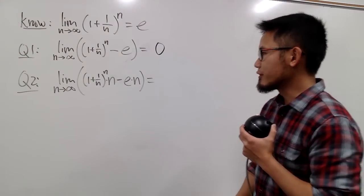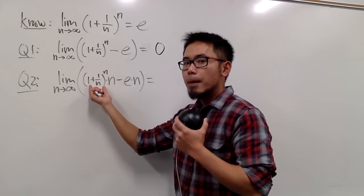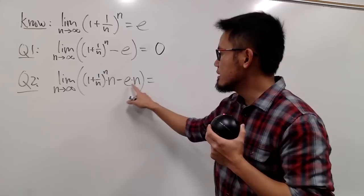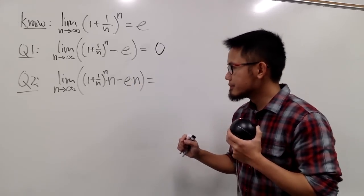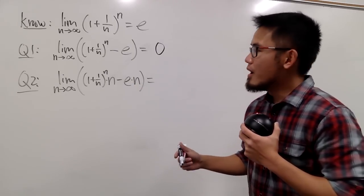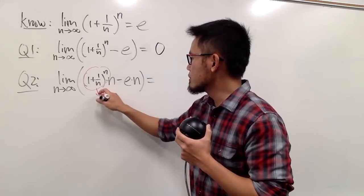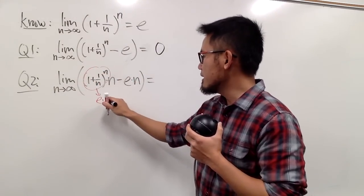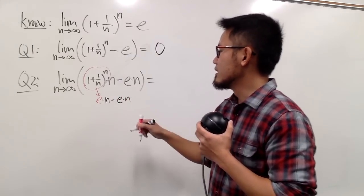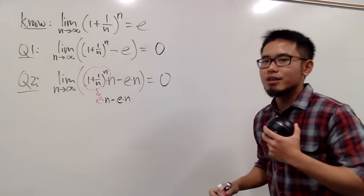Now let's take a look at the second one: the limit as n goes to infinity of the same expression, but this time we multiply by n and then subtract e times n. What do you think the answer is? Maybe you see that this goes to e, so it looks like e times n minus e times n, which would give 0.